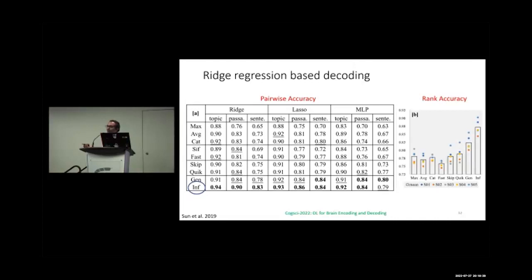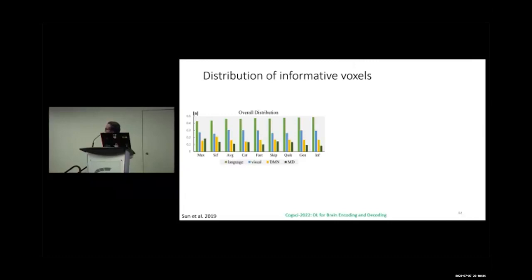They also analyzed the distribution of informative voxels across all nine distributed sentence representations. Again, the four networks — language, visual, DMN, and task-positive — show consistent distribution of informative voxels across all nine models.